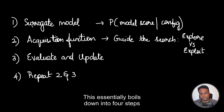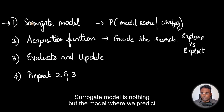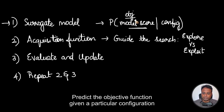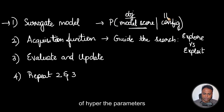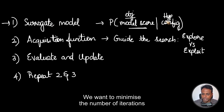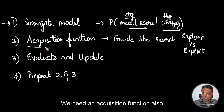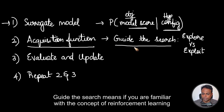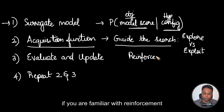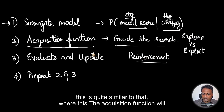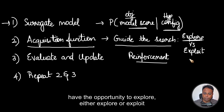This essentially boils down into four steps. First, we need a surrogate model — the model where we predict the model score or the objective function given a particular configuration of hyperparameters. At the same time, we cannot estimate this for all possible configurations, so we need an acquisition function also. This acquisition function will guide the search. If you are familiar with reinforcement learning and multi-armed bandits, this is quite similar — the acquisition function will have the opportunity to either explore or exploit.